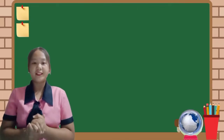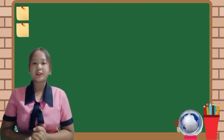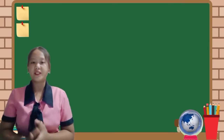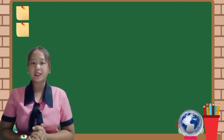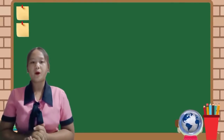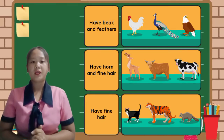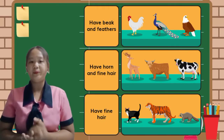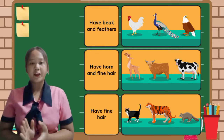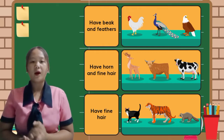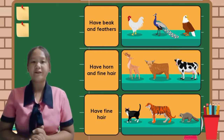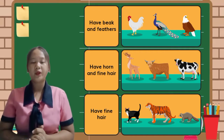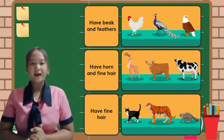Some animals have the same features as other animals. Two different animals from different species might have similar body parts. For example, chicken, peacock, and eagle have beaks and feathers. Deer, carabao, and cow have horns and fine hair. Lastly, cat, tiger, and raccoon also have fine hair.